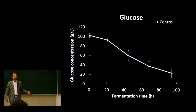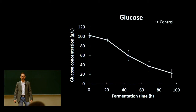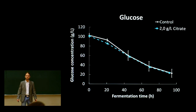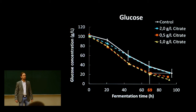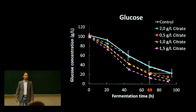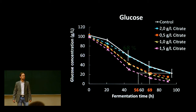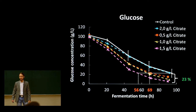We have a look at the concentration data for the glucose. We've got the control — no citrate added — and the standard deviation of the mean at each sampling point. In comparison, the 2 gram per liter citrate concentration really didn't perform any better. The 0.5 and 1 gram per liter citrate concentrations consumed the same amount of glucose after 69 hours as the control after 96 hours — an improved overall glucose consumption rate of 36%. The 1.5 gram per liter citrate concentration consumed the same amount of glucose after only 56 hours compared to the control, an overall improved glucose consumption rate of 68%. Also, this citrate concentration consumed 23% more glucose at the end of fermentation.